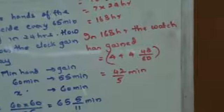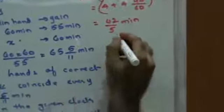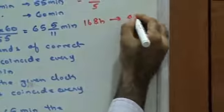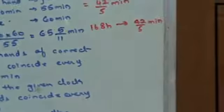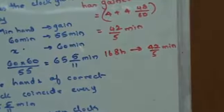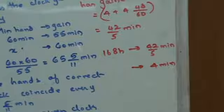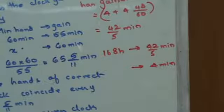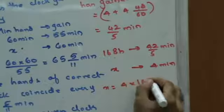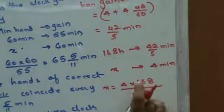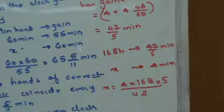It has gained 42/5 minutes in 168 hours. The watch was 4 minutes slow, so to show correct time it must gain 4 minutes. Time to gain 4 minutes: x = 4 × 168 / (42/5) = 4 × 168 × 5 / 42 = 80 hours.